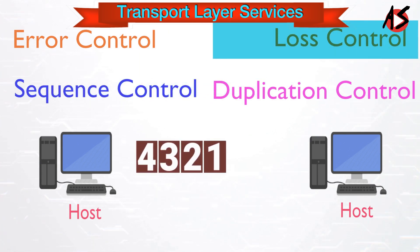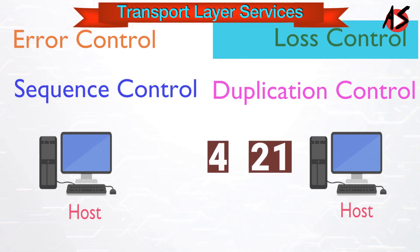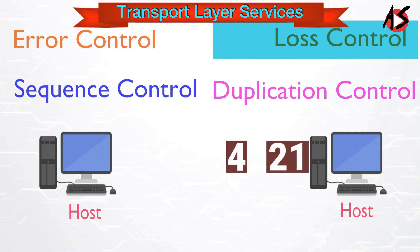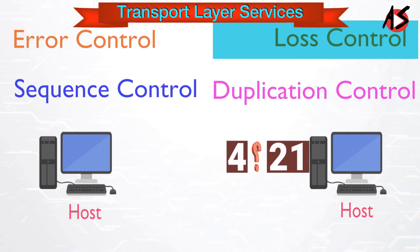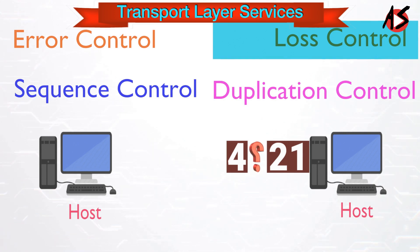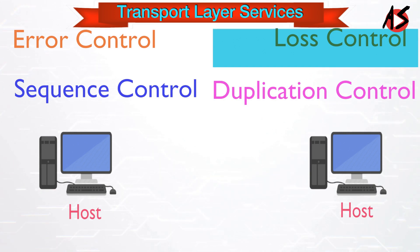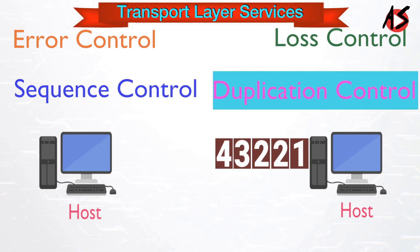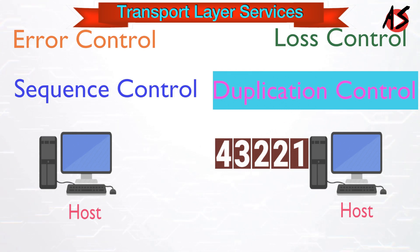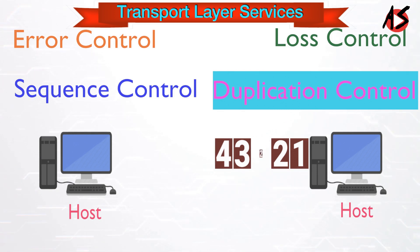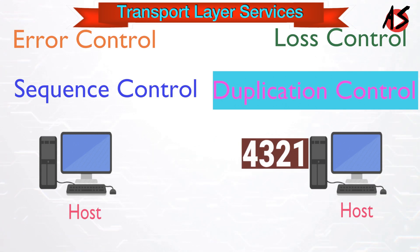Loss control takes care of lost segments — the transport layer identifies lost segments at the receiver based on sequence numbers. Duplication control guarantees that no duplicate data arrives at the receiver, allowing the receiver to identify and discard duplicate segments.